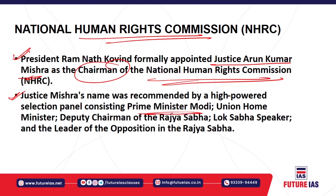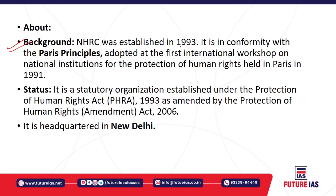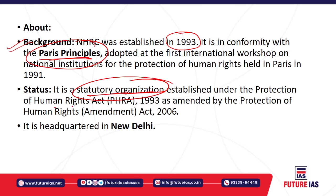The high-power selection panel recommending the name for appointment as Chairperson of the NHRC consists of: Prime Minister Narendra Modi as chairperson, the Union Home Minister, the Deputy Chairperson of the Rajya Sabha, the Lok Sabha Speaker, and the Leader of Opposition in the Rajya Sabha. The NHRC was established in 1993 in conformity with the Paris Principles, adopted at an international workshop where national institutions mandated for protection of human rights participated. The body is set up under the Protection of Human Rights Act 1993, amended in 2006, headquartered in New Delhi.